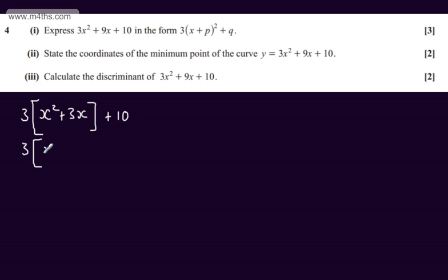Then we'll have x plus half the coefficient which is 3 over 2. We square the bracket and subtract away 3 over 2 squared which will give us minus 9 over 4. I'm then going to add the 10.